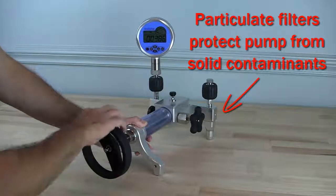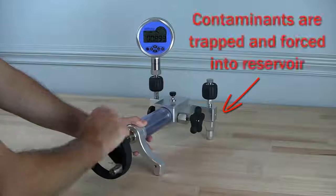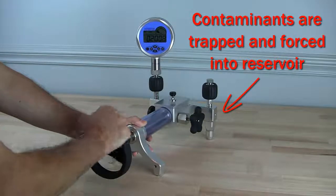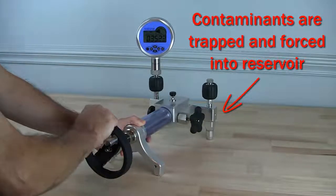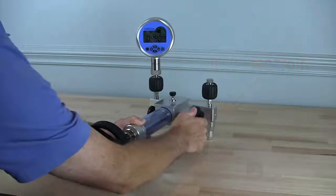To set a test pressure, close the reservoir isolation valve and use the patented screw press to pre-pressurize the system. Set your final test pressure using the fine control valve.